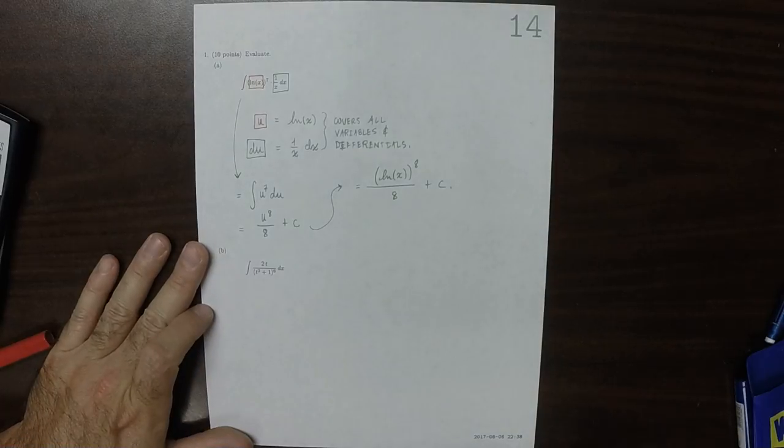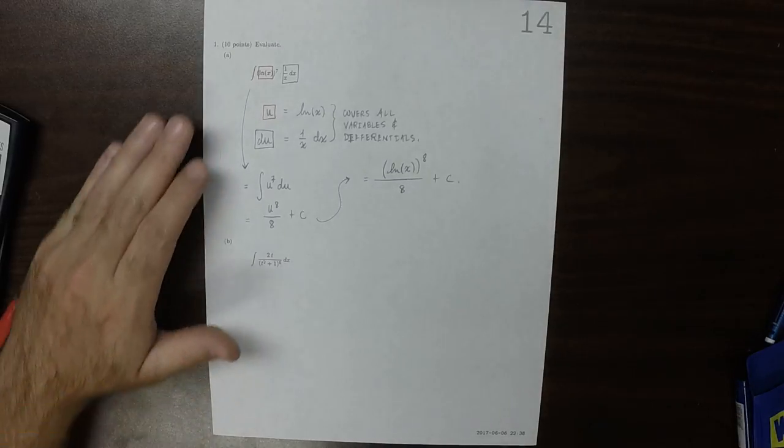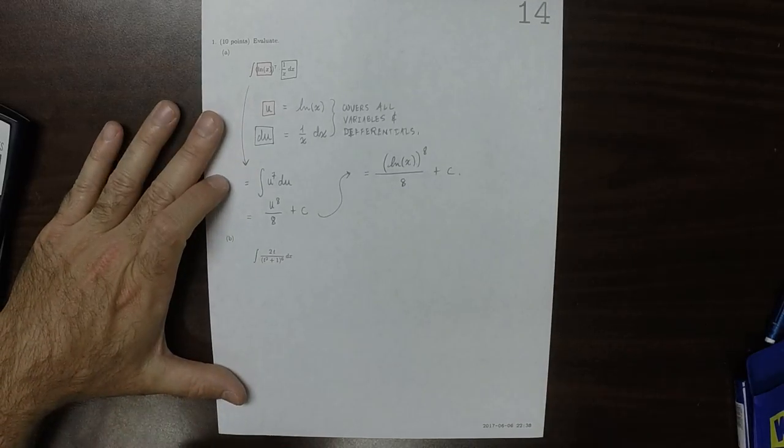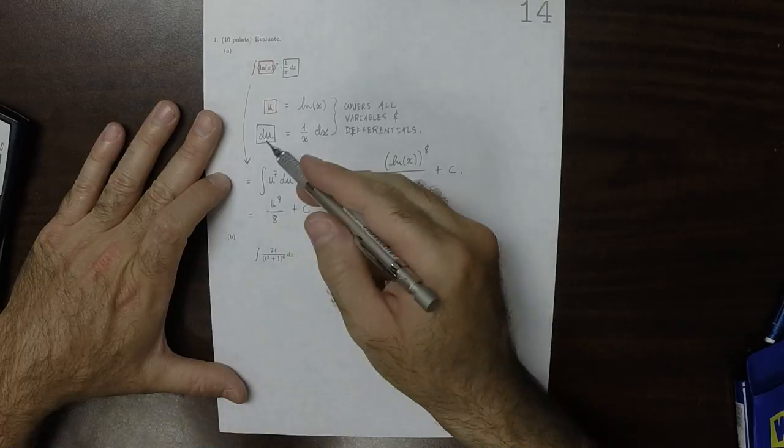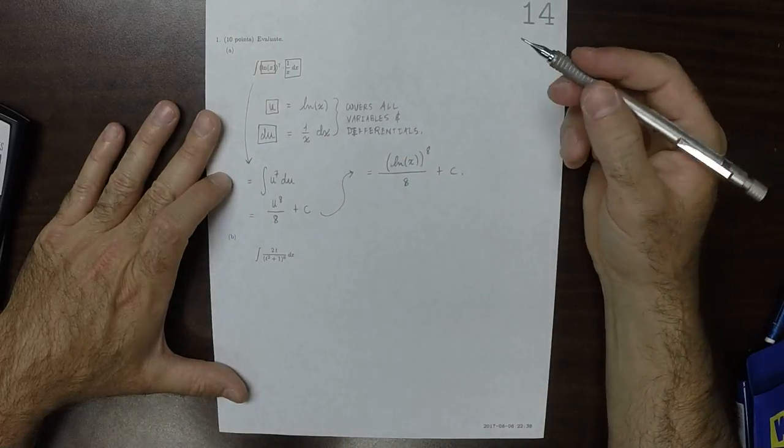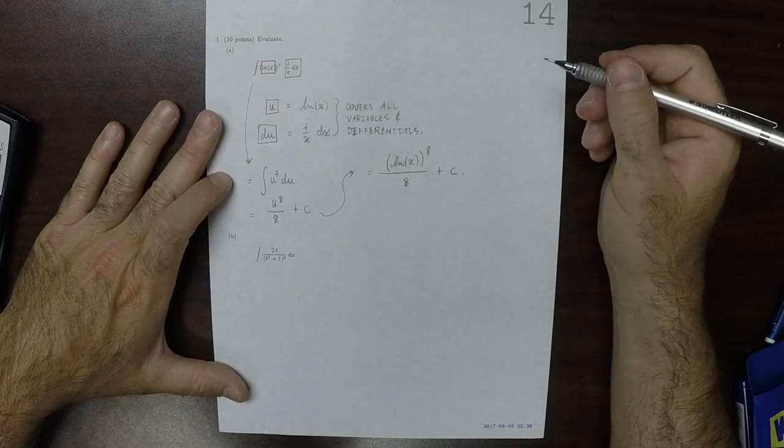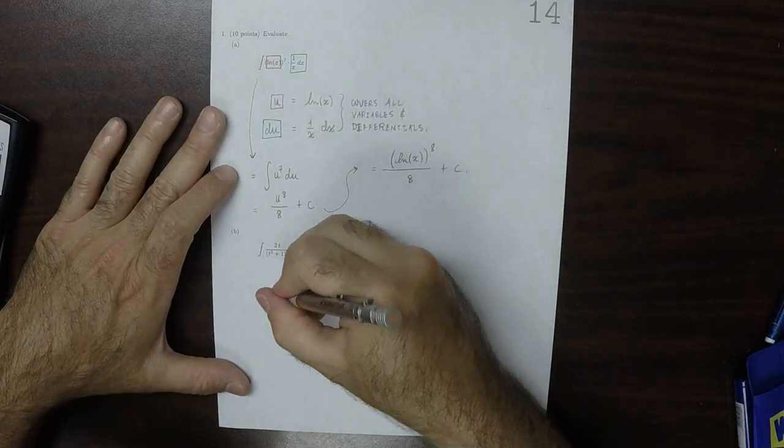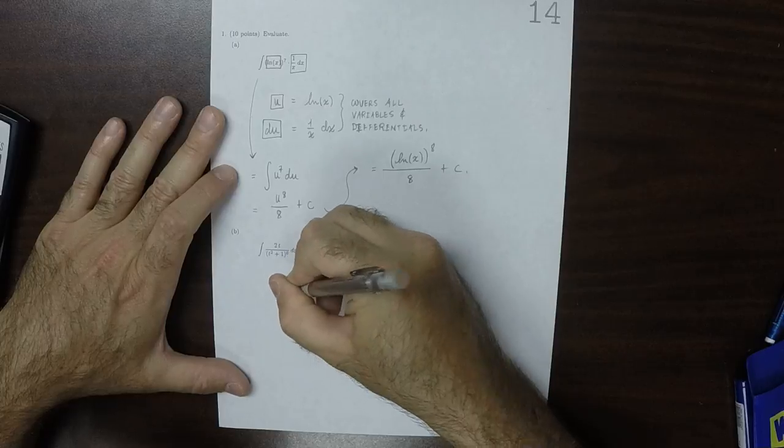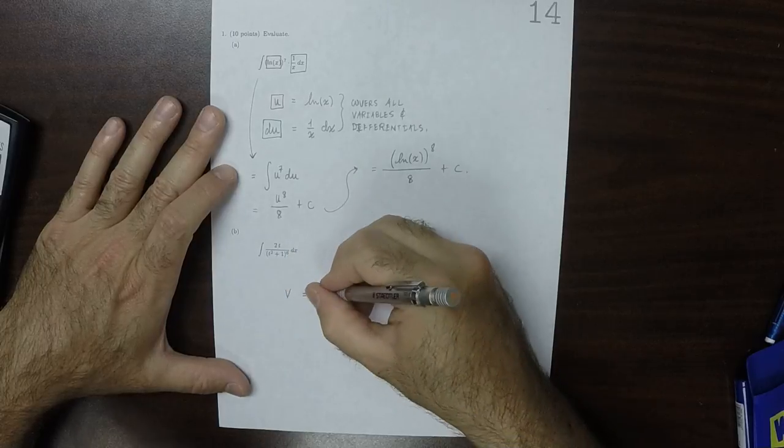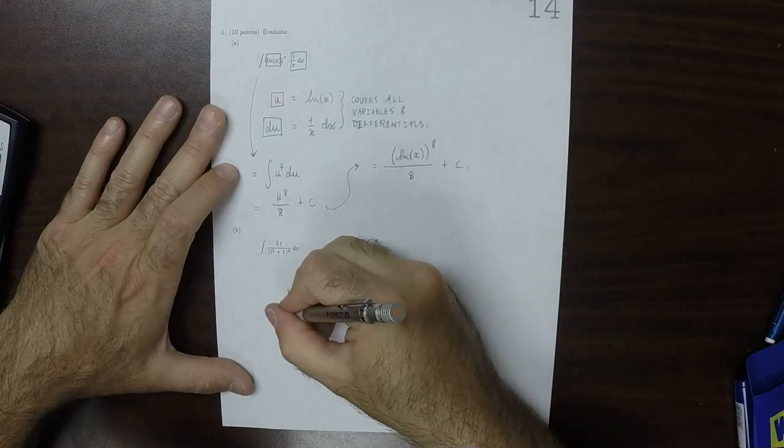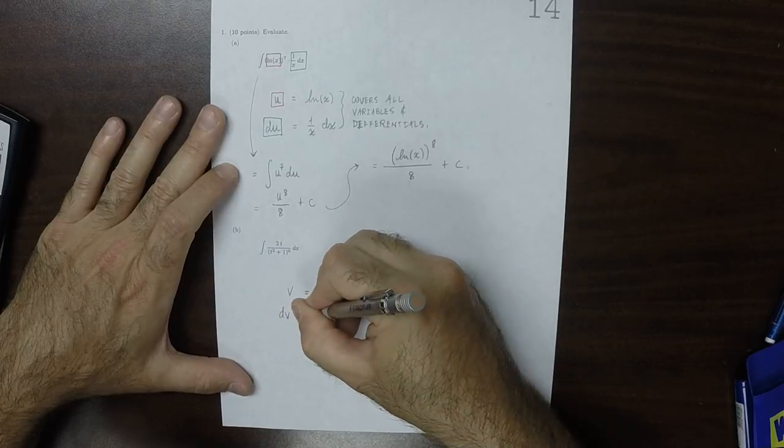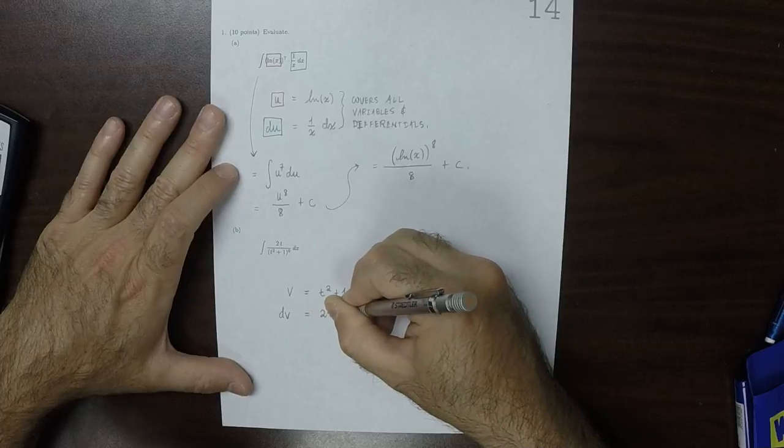So again here, this is another substitution. Just so you don't get too attached to the letter u as being somehow special, I'll use a different letter, I'll use v. So I'll say that v, letter v, is t squared plus 1, then dv as a result would be 2t dt.